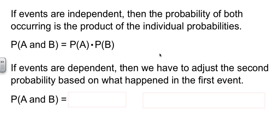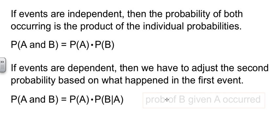Now, if they're dependent, we have to make an adjustment for what happened in the first case. So we get this other funky-looking little symbol here. We get the probability of A times the probability of B, given that A occurred.